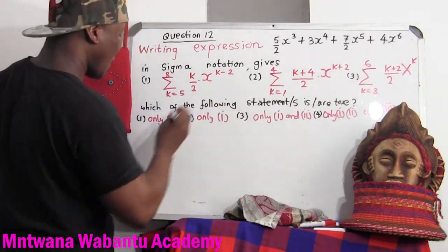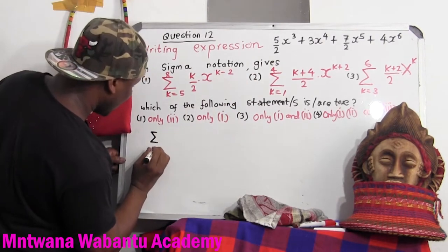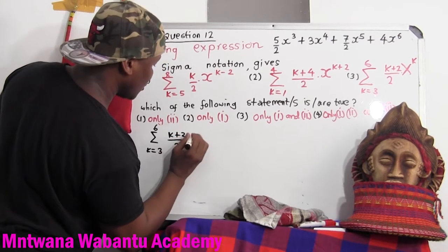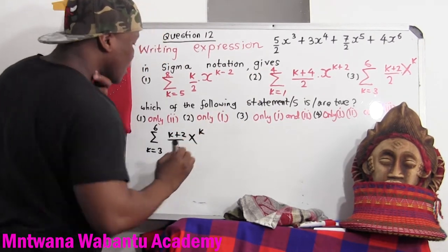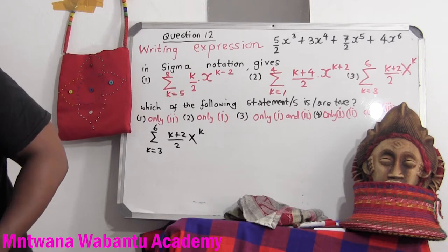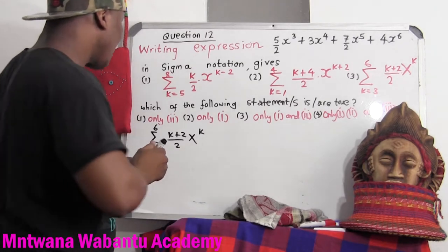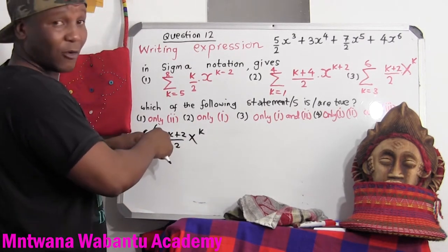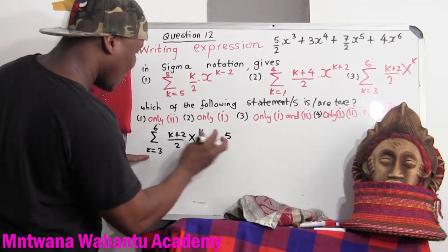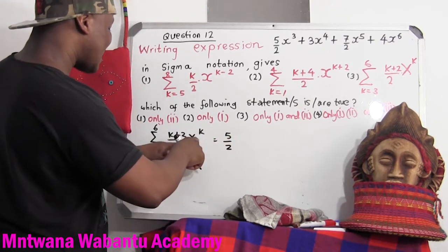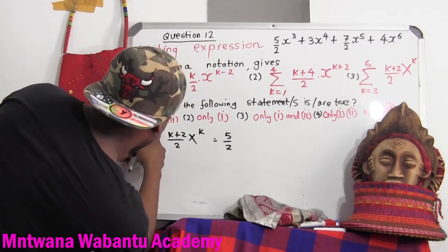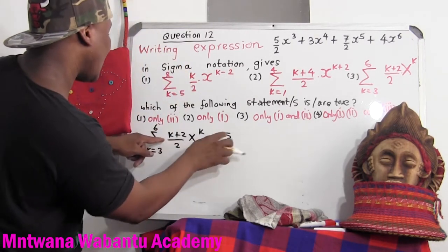So we have the sum where k equals 3, then k equals 6, and then (k + 2) over 2, times x to the power of k. When k equals 3, we substitute 3: so 3 plus 2 equals 5 over 2, times x to the power of k. I don't know the value of x, but k starts from 3 to 6. So this first term equals 5 over 2 times x to the power k.